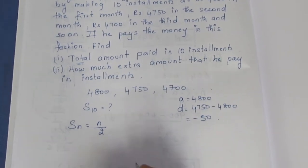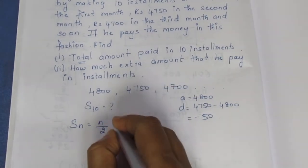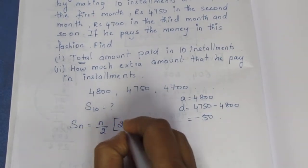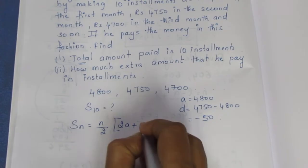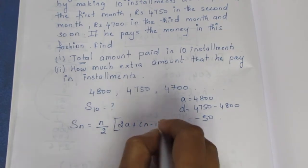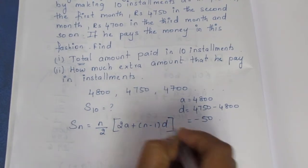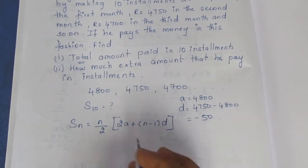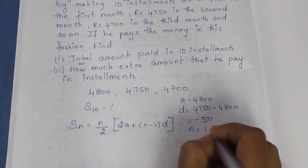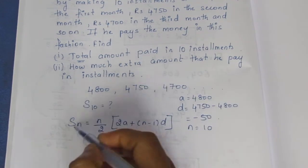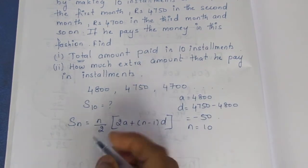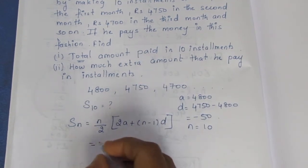We apply the sum formula: Sn equals n by 2 into 2a plus n minus 1 into d. We substitute the known values into this formula.